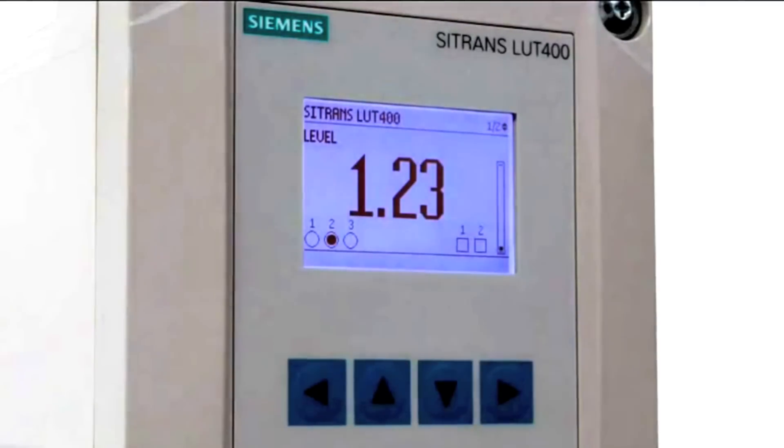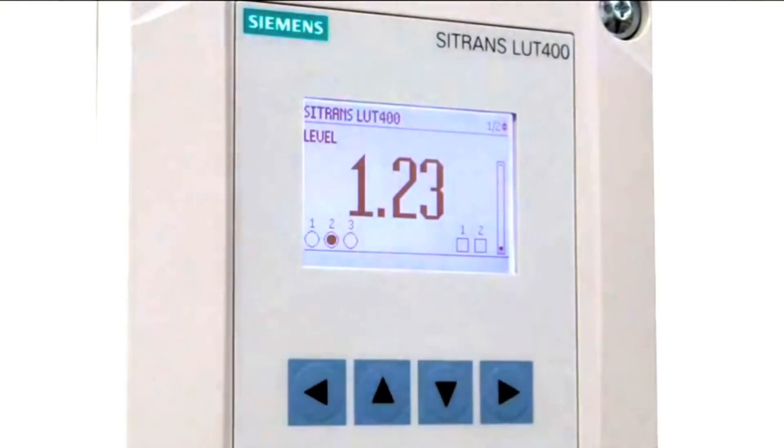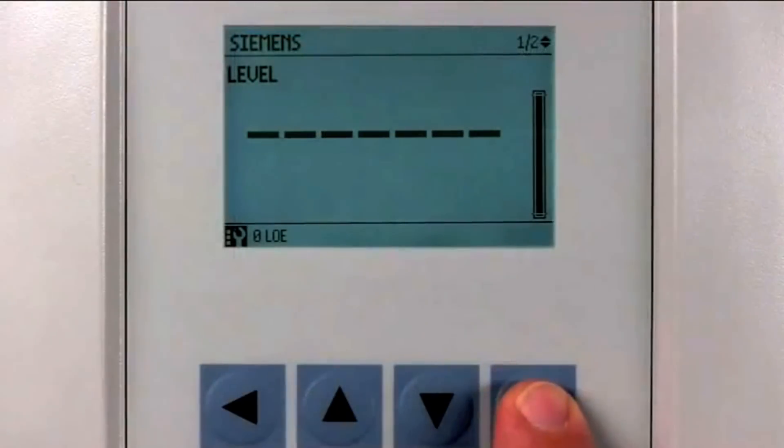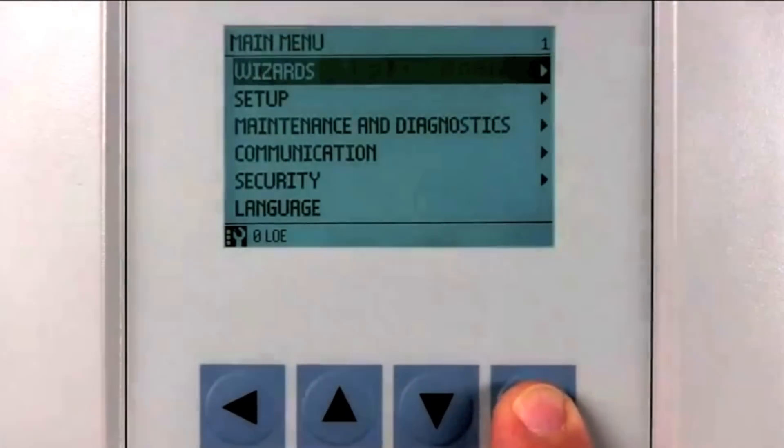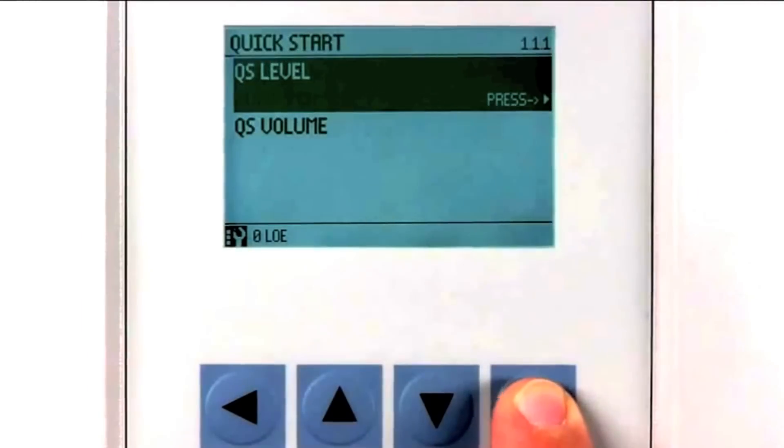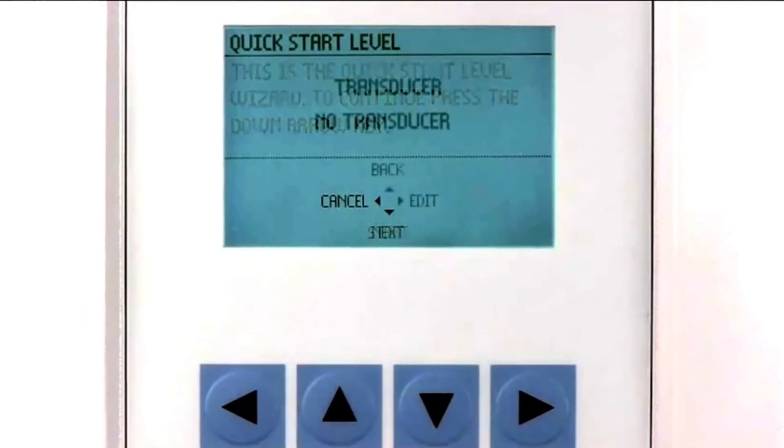The Citrans LUT400 Quick Start Level Wizard gets you measuring in less than a minute. Press the right arrow four times to access the Quick Start Level menu. Then press the down arrow to start the wizard.